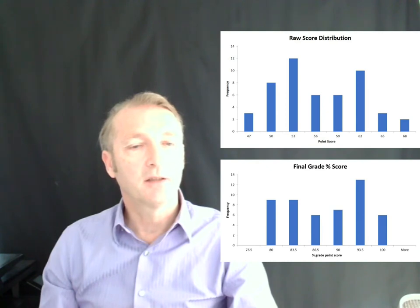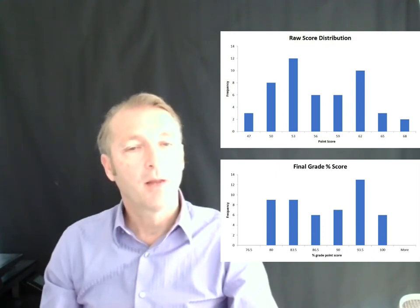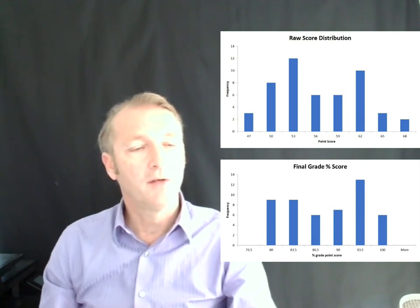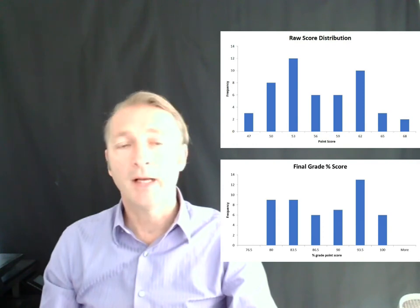I also want to show the distribution scores. Here you can see the distribution of the raw scores split into different bins, and at the bottom the distribution of the corrected scores. The general distribution looks more or less the same, which is why this method disturbs the distribution of scores as little as possible when curving.